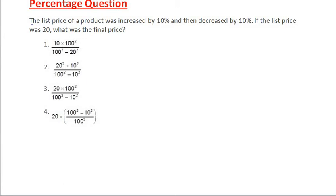Hello everyone, welcome back. The question we have says the list price of a product was increased by 10% and then decreased by 10%. If the list price was 20, what was the final price?